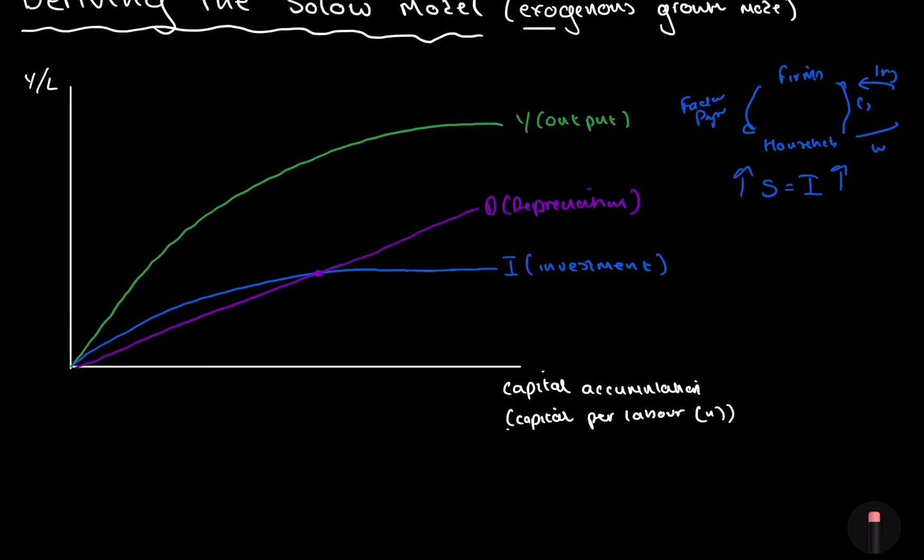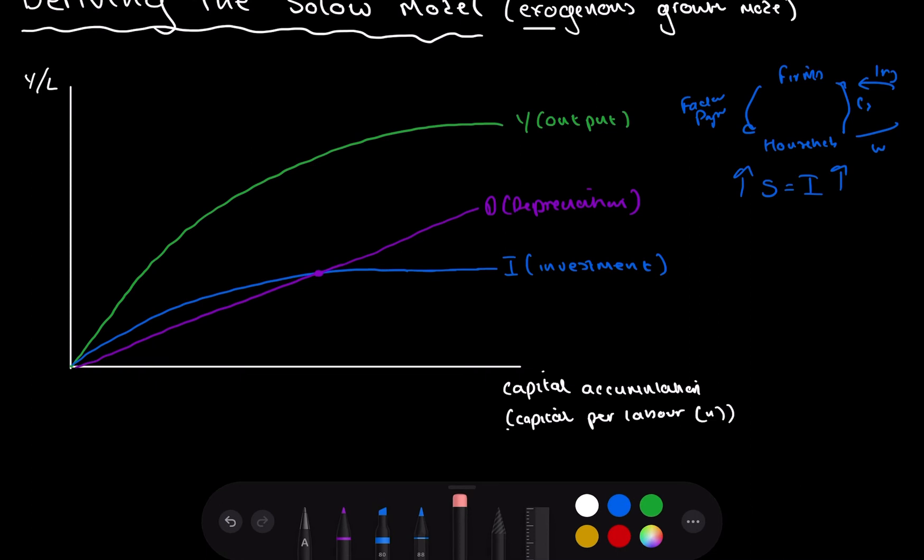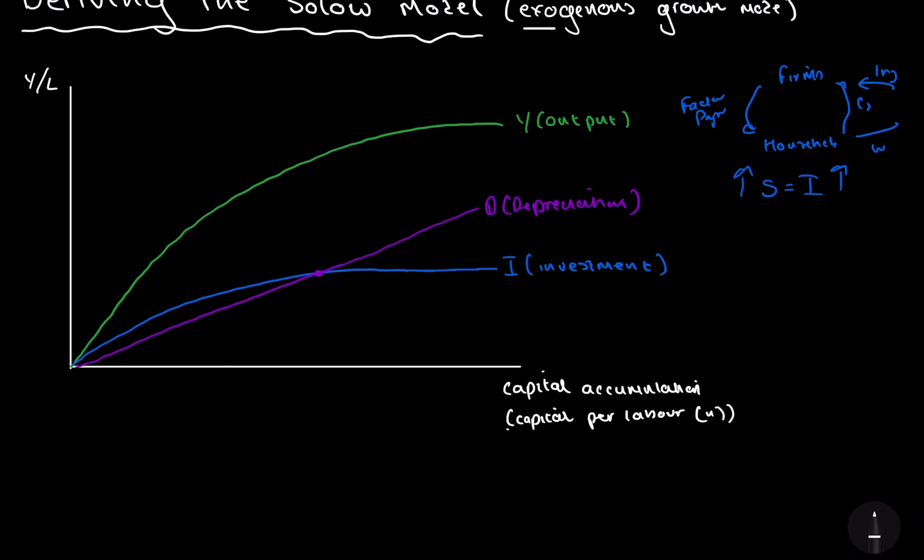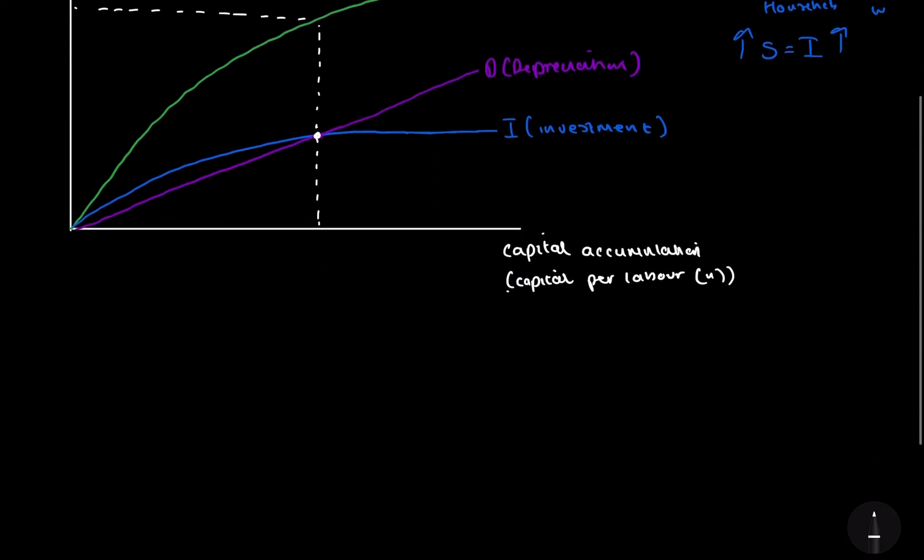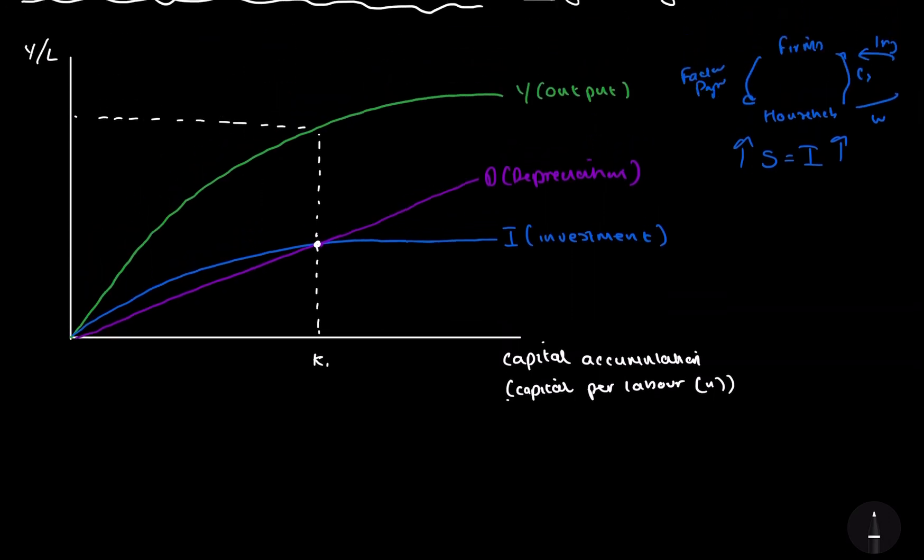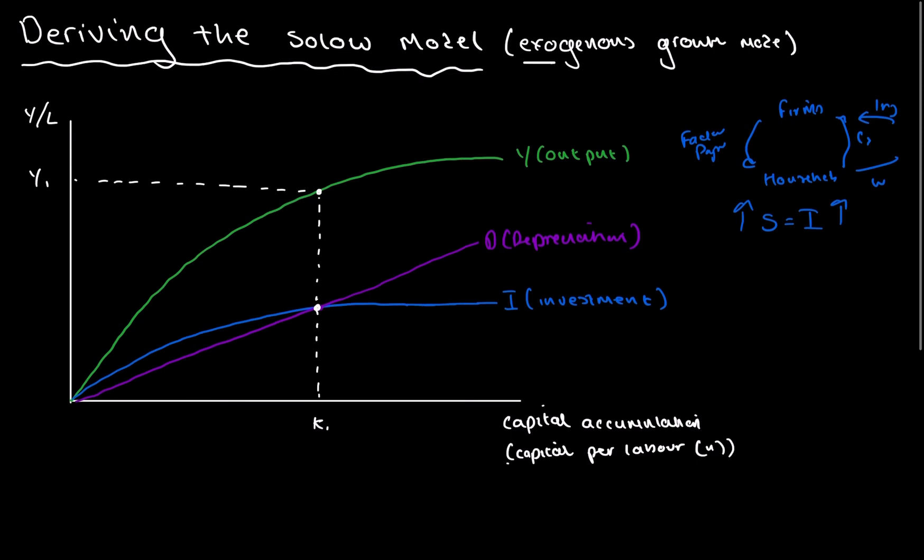As you can see, at this point, they're crossing over. You can see that at a given level of capital accumulation, let's call this K1, will give you a certain level of output, Y1. And that is essentially deriving the Solow model.